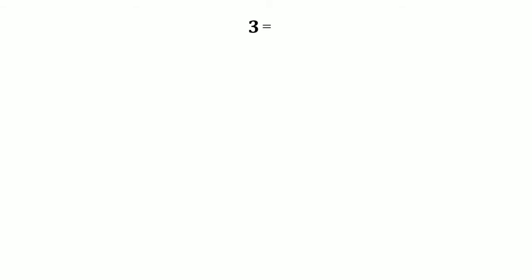We know that 3 = √9, and we can express 9 = 1 + 8. Then we express 8 = 2 × 4, so √9 = √(1 + 2·4). We can then express 4 as √16, giving us √(1 + 2·√16).